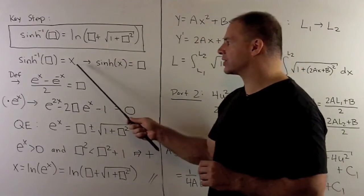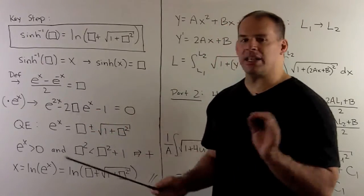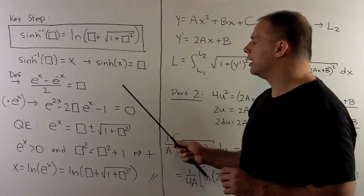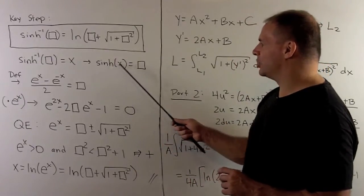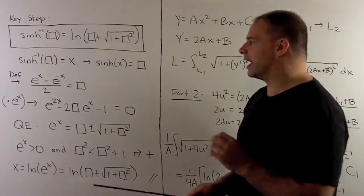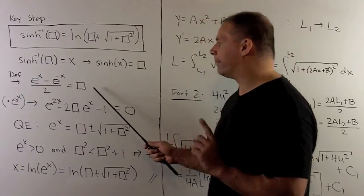Then, to say that inverse sinh of box is equal to x, same as saying that sinh of x is equal to box. Now, I'm going to go to the definition of sinh of x. That says e to the x minus e to the minus x over 2 is equal to box.